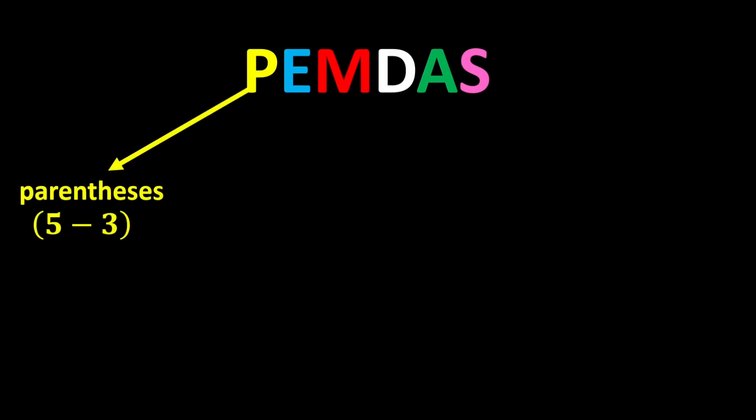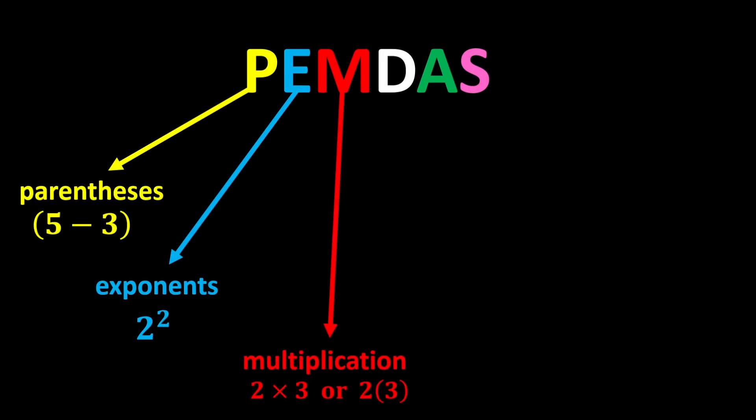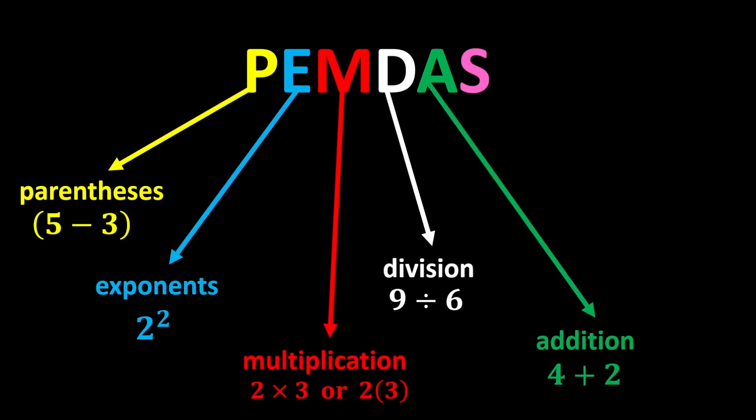P stands for parentheses, E stands for exponents, M stands for multiplication, D stands for division, A stands for addition, and S stands for subtraction. According to PEMDAS, we first calculate the parentheses, then we calculate the exponents.